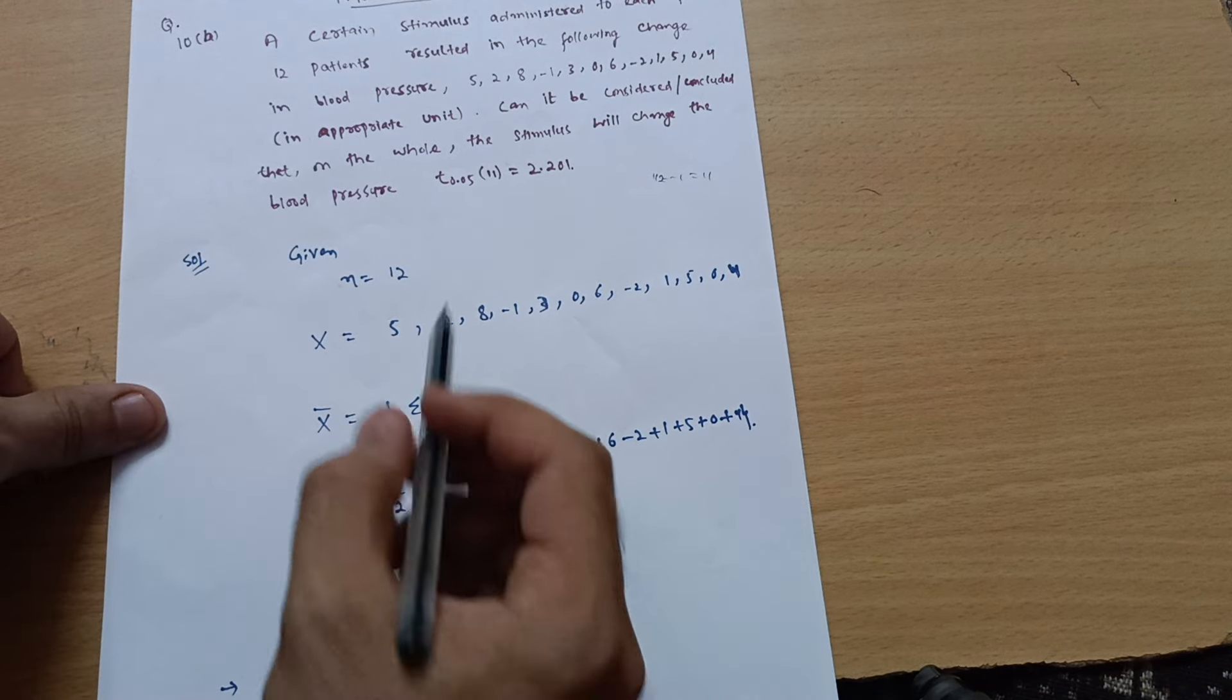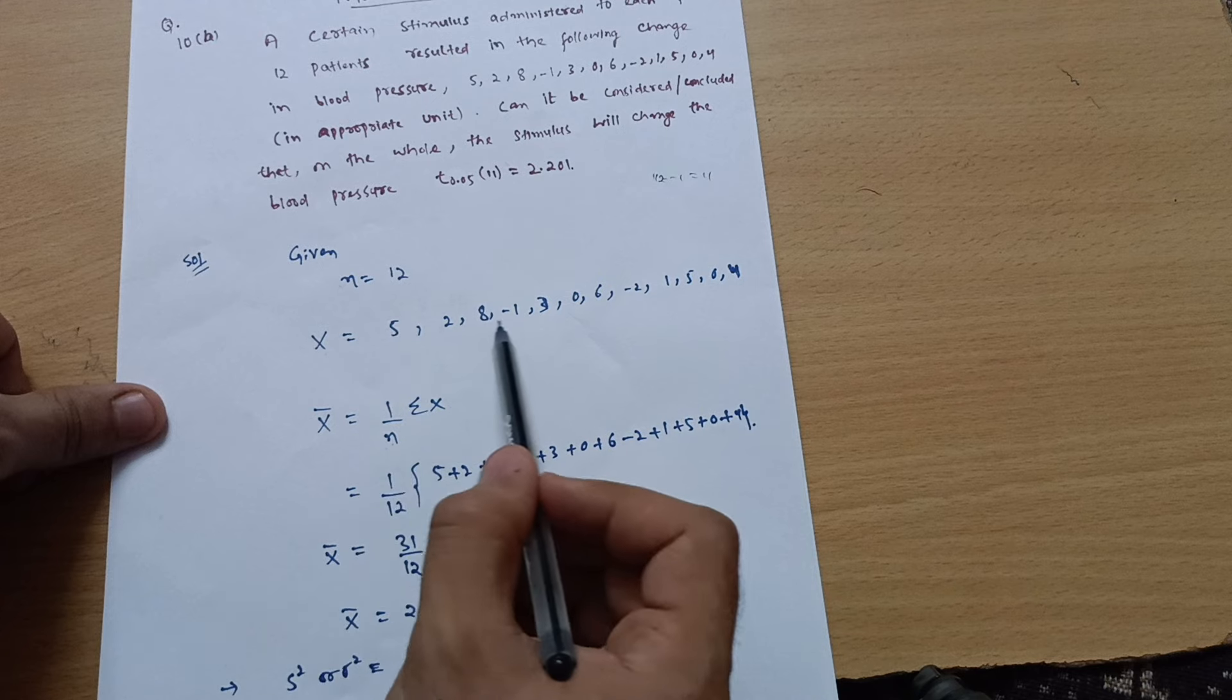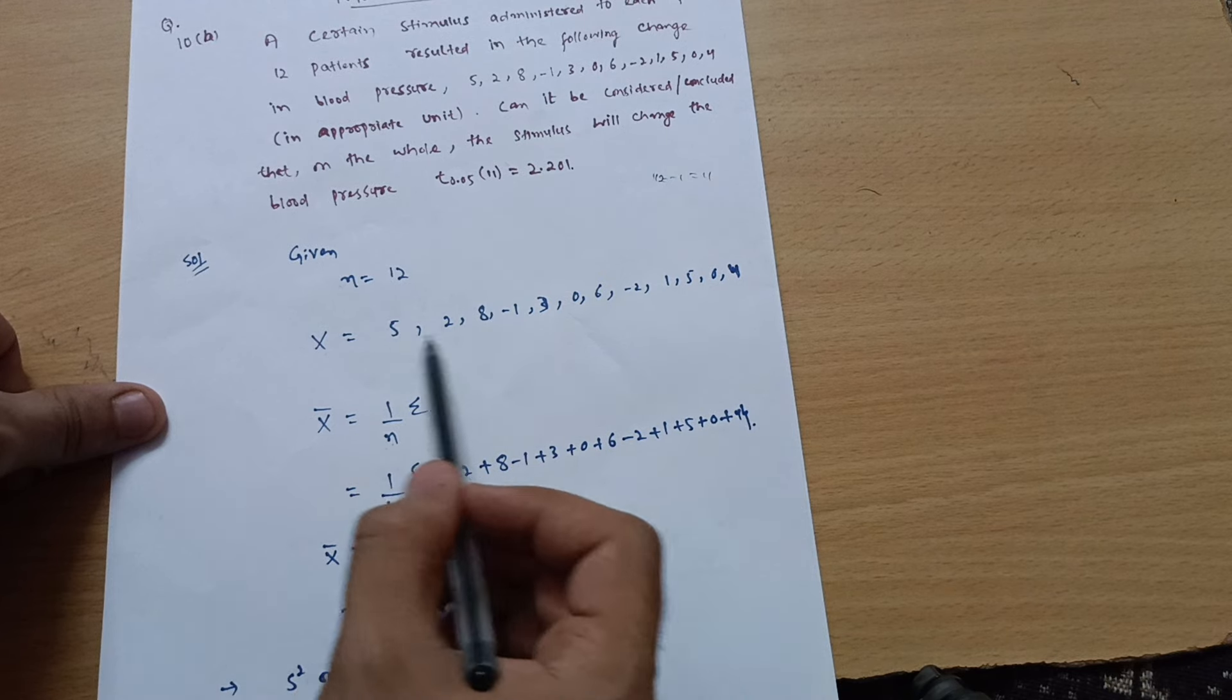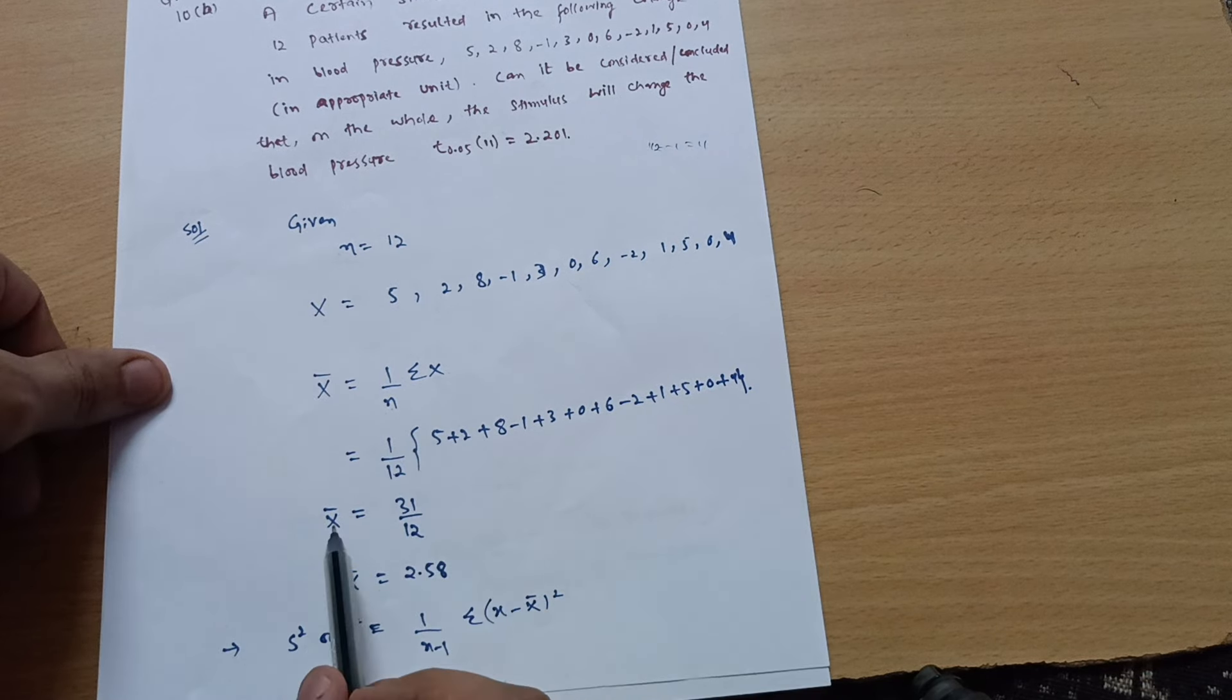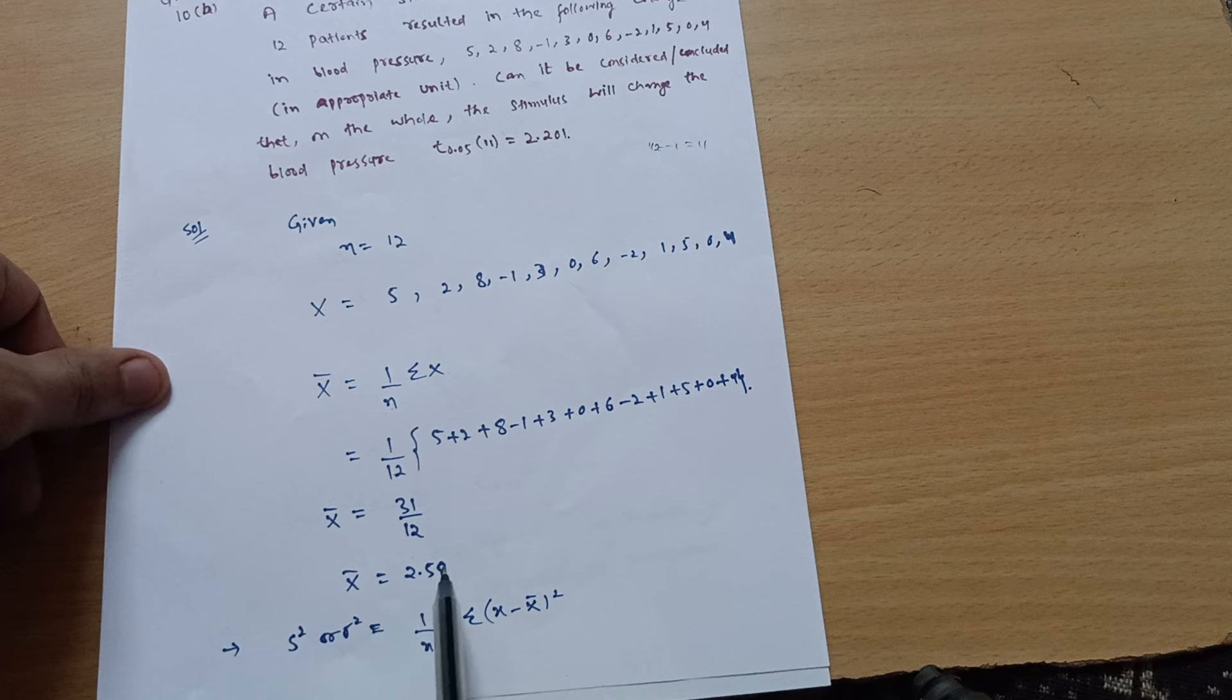We are calculating the x bar. So, x bar formula is 1 upon n, summation of x. So, what is the n value? n value is 12. Summation of x means 5 plus 2 plus 8 minus 1, we have to write down the summation of this much. So, 1 by 12 into this summation, you will get x bar is equal to 31 by 12 and x bar is equal to 2.58.